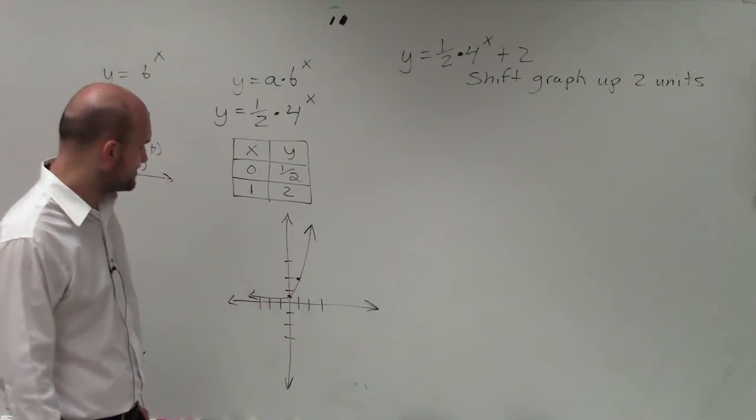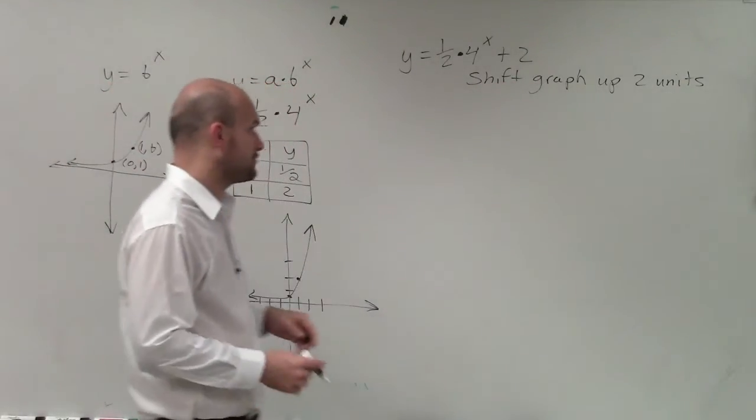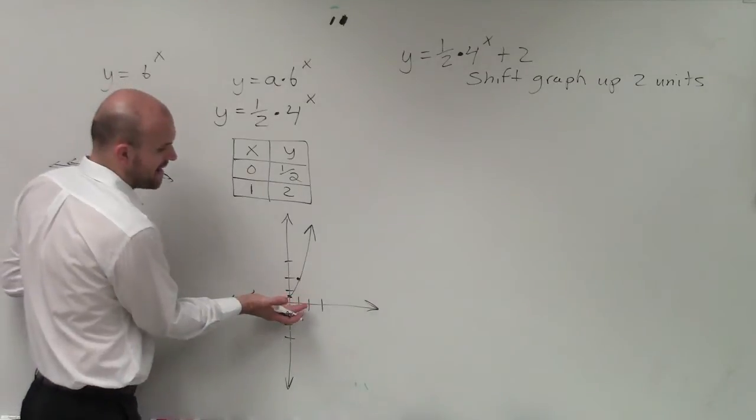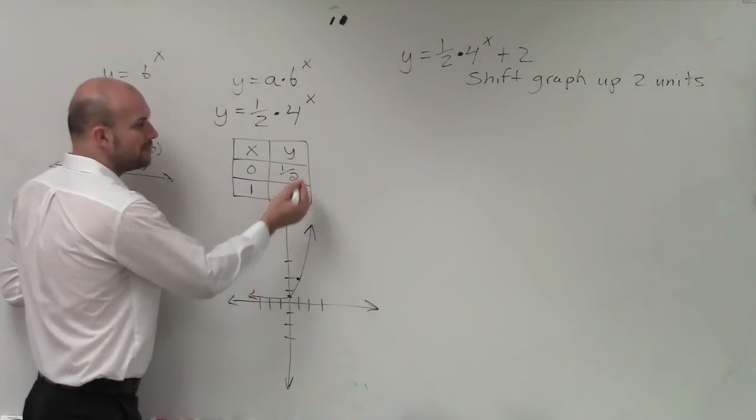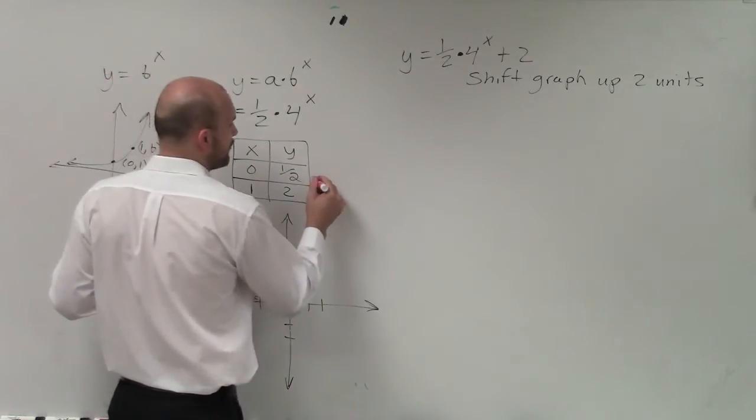So therefore, that's my original. Now, that's my parent graph. But that does not contain the shifting of the graph up 2 units. So if I was going to take this graph and shift it up 2 units, pretty much what I'm doing is I'm adding two values to my y-coordinates.